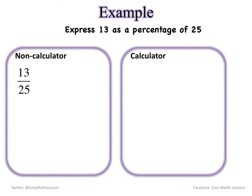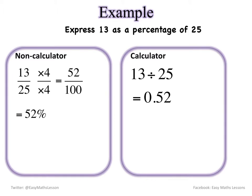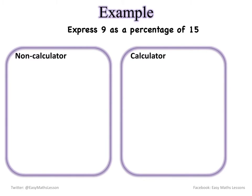So 25 into 100, well this means I need to times it by 4. So 13 times by 4 is 52 and 25 times by 4 is 100, and therefore 52%. Calculator even easier: 13 divided by 25 is 0.52 times by 100 and I get 52%.